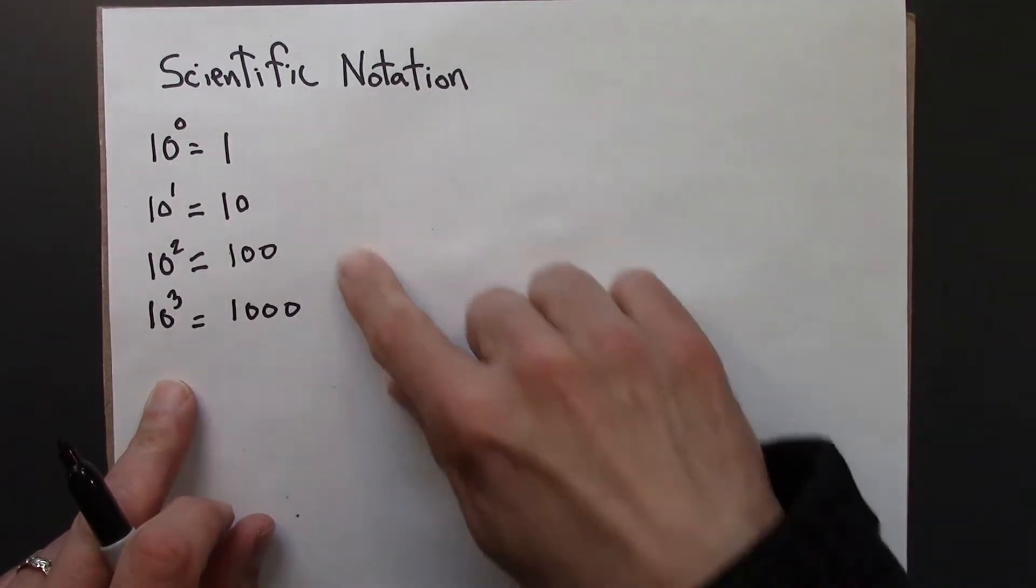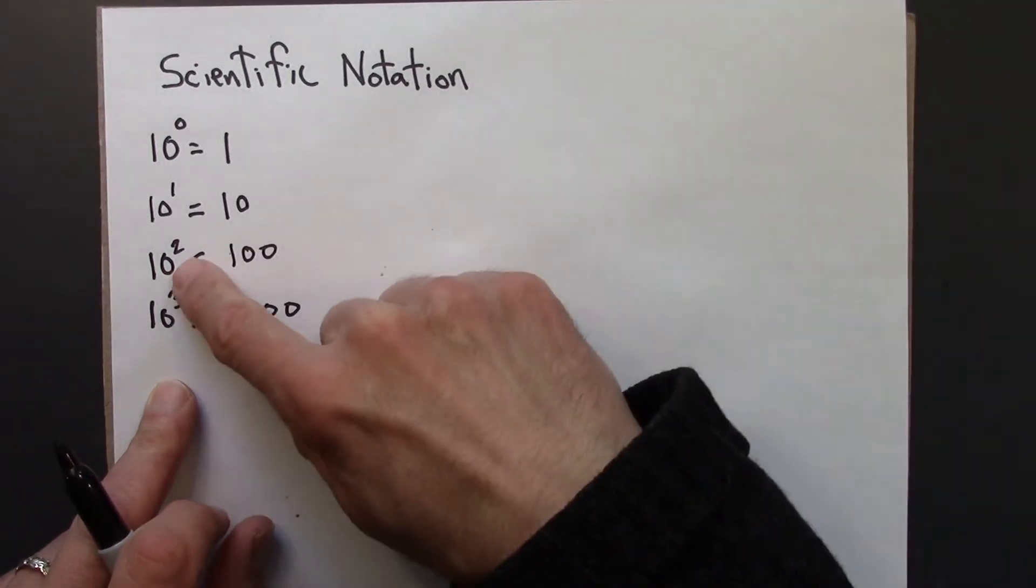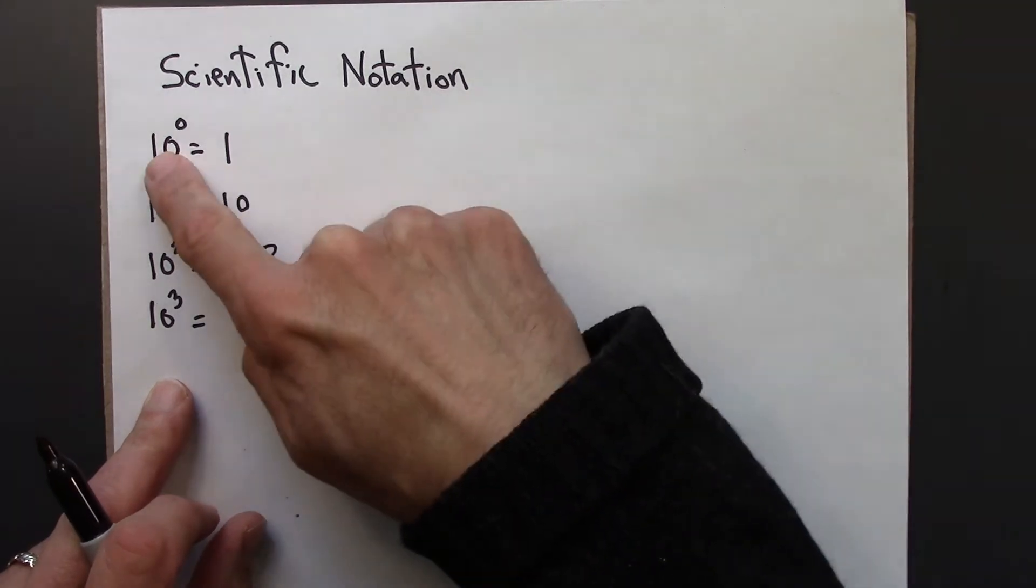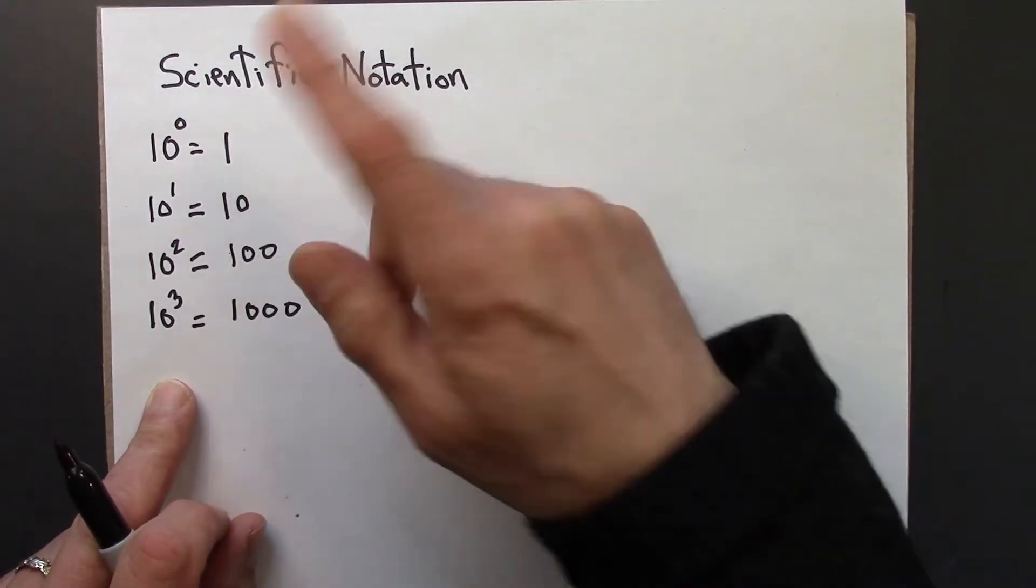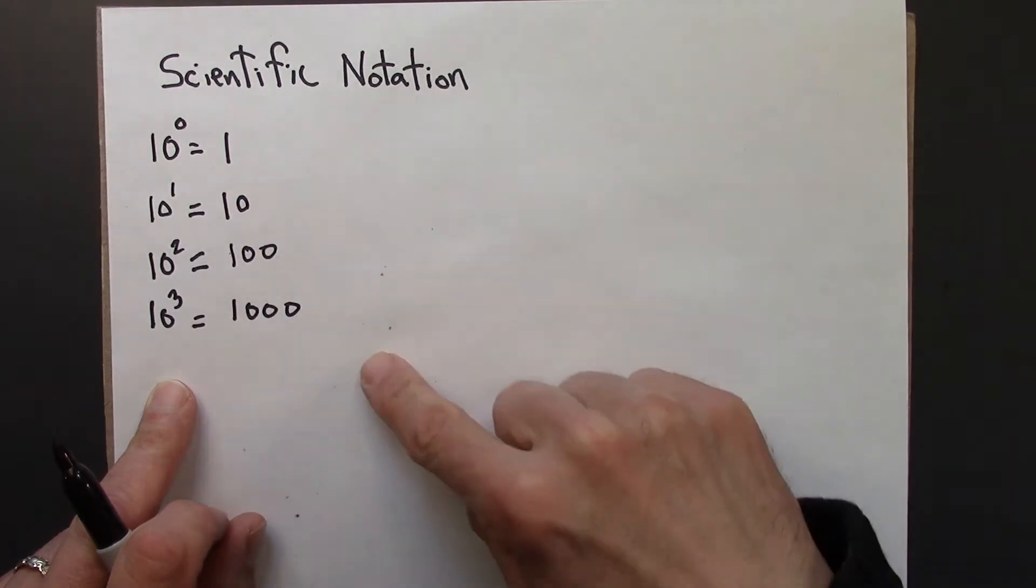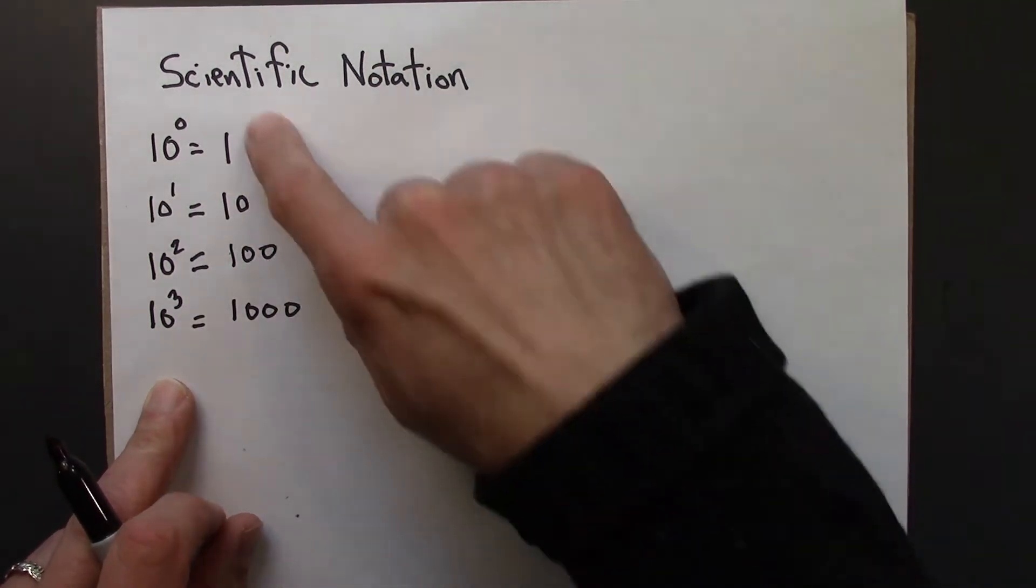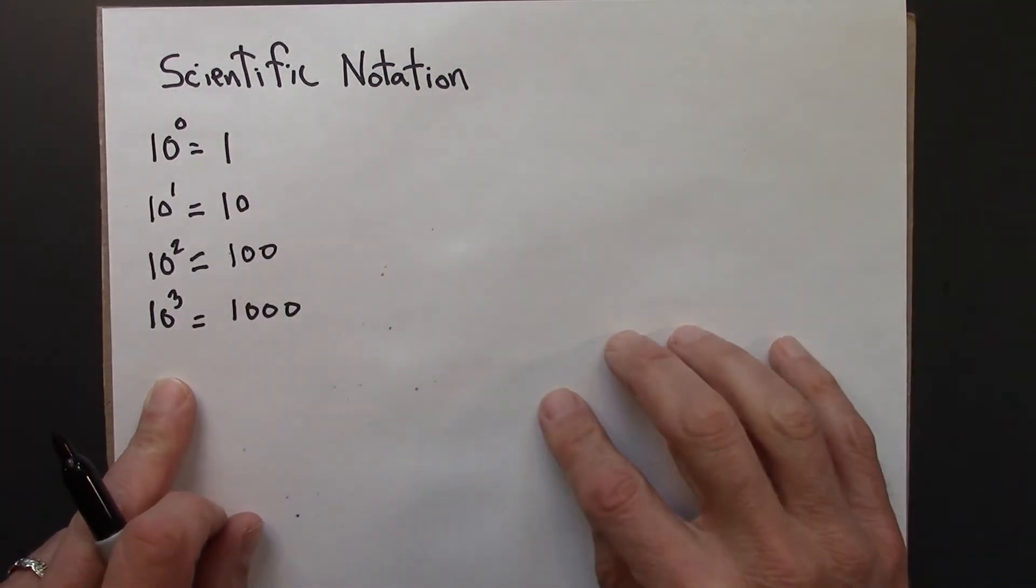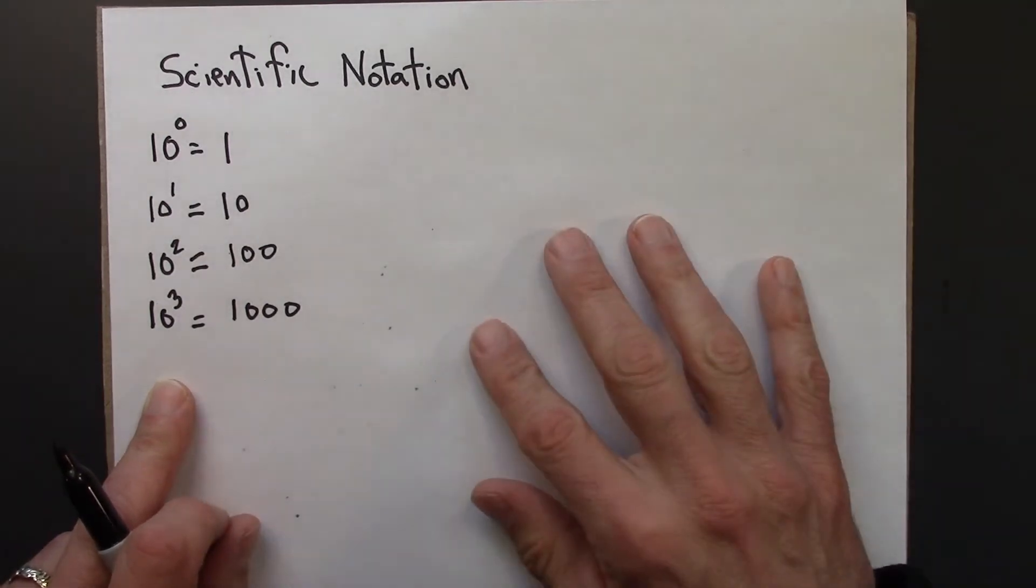And we can start to see the pattern. 10 to the 2 has 2 zeros. 10 to the 0 has 0 zeros. 10 to the 1 has 1 zero, and so on. So we can use this fact to write large numbers in a simpler way.